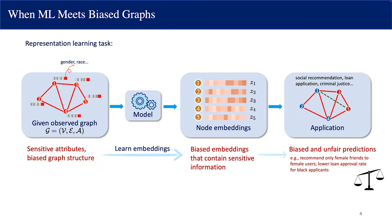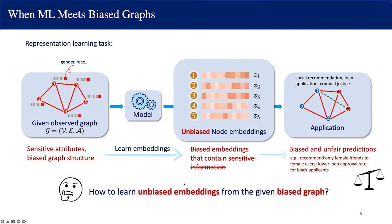For example, the model applied on such biased embeddings may recommend only female friends to female users, or predict lower loan approval rates for black applicants. So in order to address this issue, the goal is to learn unbiased node embeddings from the given biased graph observations, where the embeddings shouldn't contain any sensitive information about the sensitive attributes.